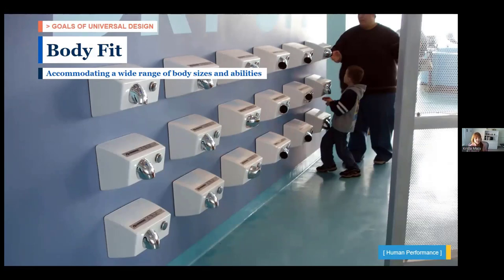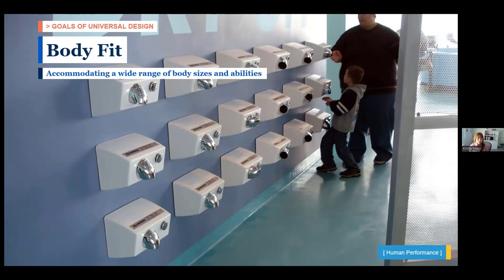The first goal is Body Fit: does the design accommodate a wide range of body sizes and abilities? The image shown is an exhibit at the Pittsburgh Children's Museum — an arrangement of three rows of hand dryers for people of all sizes, usable to dry different parts of the body. It's not limited to a single height. When thinking about body fit, you want to design for the extremes, design for choice, design for the average with accommodations, and break from precedent.